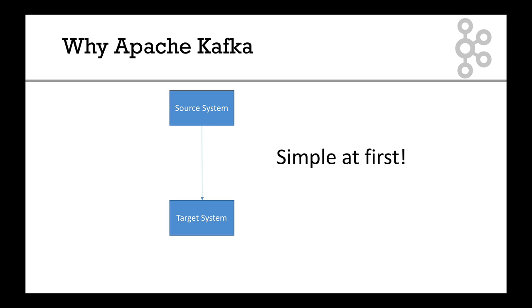So now we're going to talk about why Apache Kafka. Let's take a very simple example. At first you have a source system and you have a target system — this could be your website and your database.